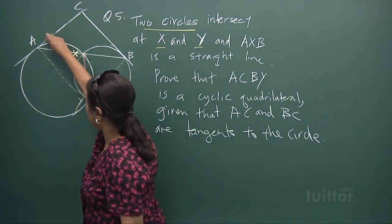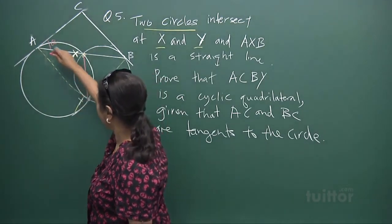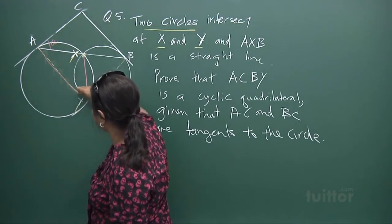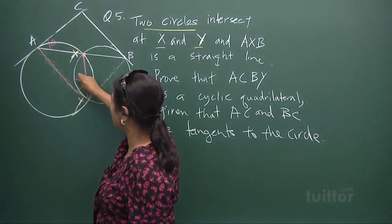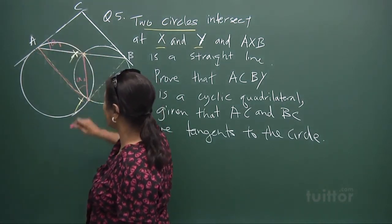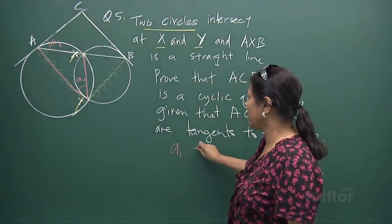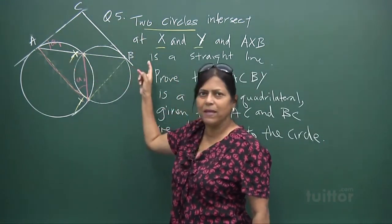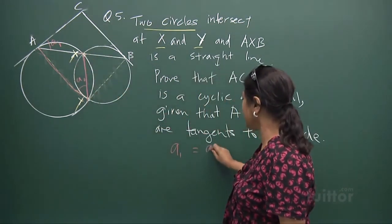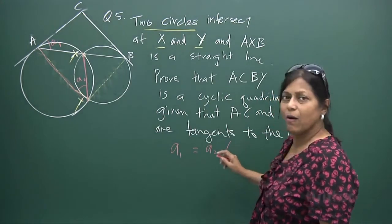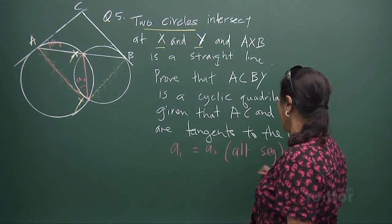Look at this triangle and I call this angle A. You've drawn the invisible line. Do you see this as A1 equals A2? I'm labeling it — angle CAB is equal to angle AYX. What is the reason? Alternate segment theorem. See how powerful this property is.